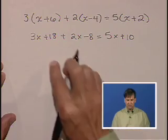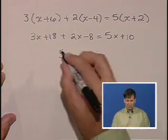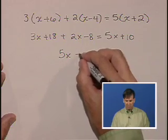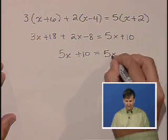Now we are going to collect like terms. 3x and 2x is 5x plus 18 and minus 8 is plus 10. That equals 5x plus 10.